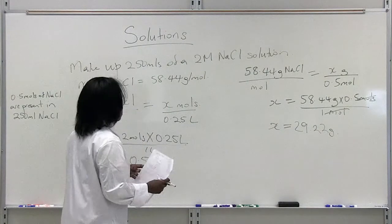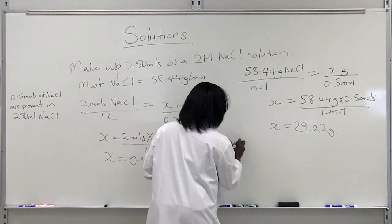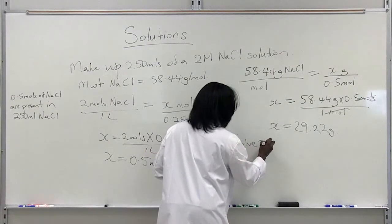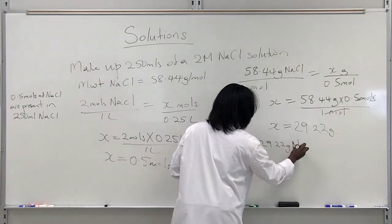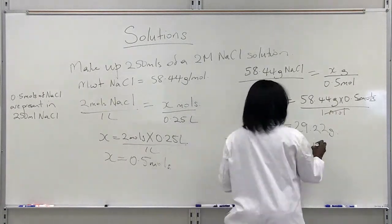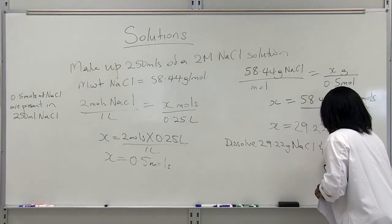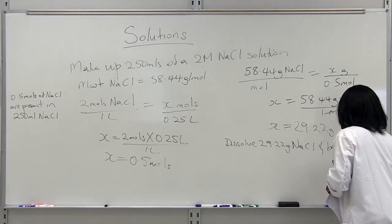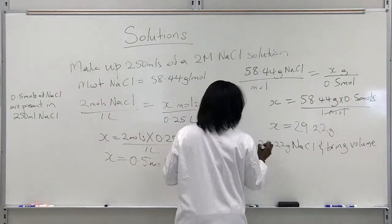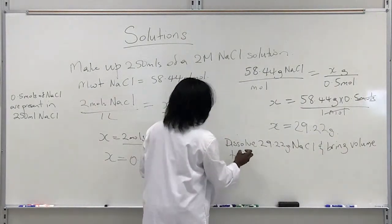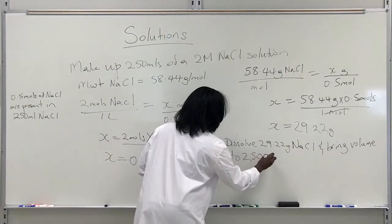So in order to make up this solution, we are going to dissolve 29.22 grams of sodium chloride and bring the volume to 250 mL.